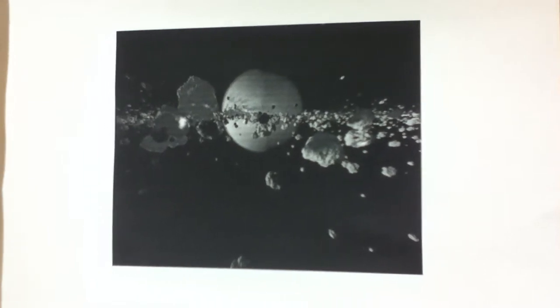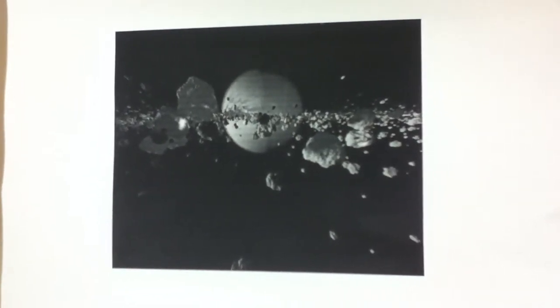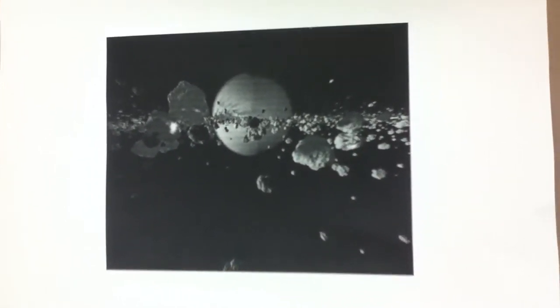They come in two overarching, very broad classes, iron and stony. The irony is that the iron asteroids are ironies. Be quiet. Just be quiet.